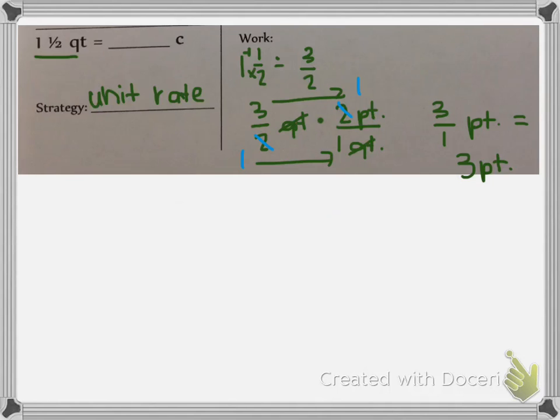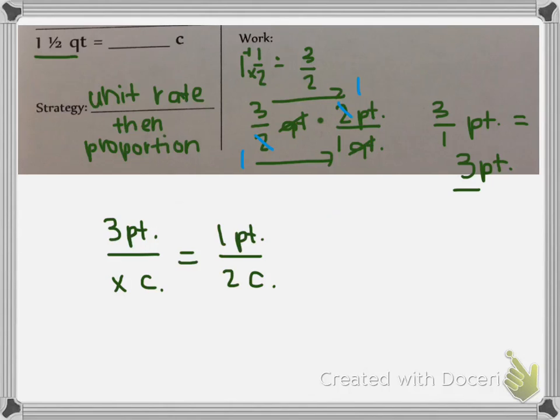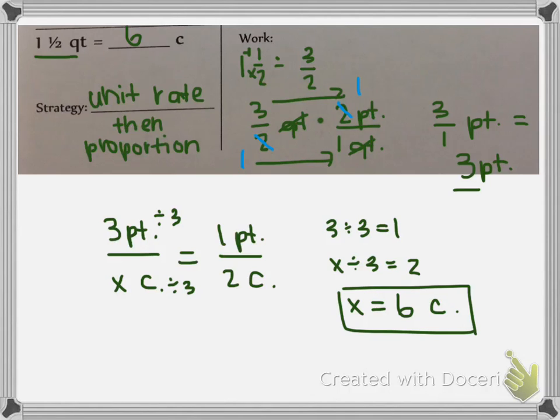But the question is not asking me about how many pints there are. It's asking about how many cups. So I need to take another step to solve the problem. Now though, I have a whole number, so I don't need to use a unit rate again. I can use a proportion. So back over here where it says strategy, we're going to say unit rate, then proportion, because we're actually using both. So I have 3 pints, and I want to know how many cups are in 3 pints. But I don't know that number yet, so I'm going to put X number of cups. This is equal to 1 pint and 2 cups, because there are 2 cups in every 1 pint. So I now have my proportion and I can solve. Why don't you pause to solve and press play to check. So our answer was 6 cups.